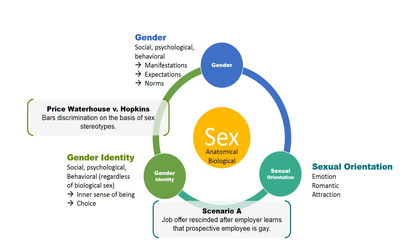Now let's consider a different scenario. An applicant successfully goes through the interview process and is offered a job. The employer then learns that the prospective employee is gay and rescinds the offer. Is that legal? Under Title VII, purely from a federal standpoint, that would be considered not illegal. However, if it were in Washington state — where there are anti-discriminatory laws around sexual orientation — or even in a locality like Seattle, where sexual orientation is a protected characteristic, that would be considered illegal. It depends on where the adverse employment decision occurred.